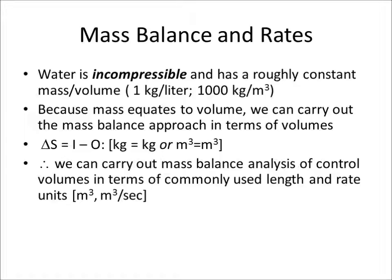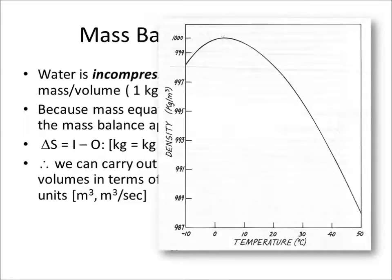Because mass and volume are essentially the same thing when we talk about water, we can substitute volume for mass when carrying out mass balance analysis. Although water changes its density a little with temperature — and looking at the scale on the left-hand side, this shows density over a range from negative 10 to 50 degrees centigrade — the maximum density occurs at about 4°C. But the change in density in the liquid phase is very, very small and negligible for the purpose of using volume as a substitute for mass.